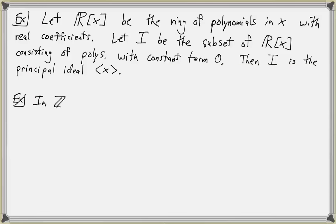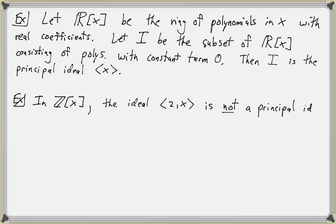Next, let's look at the ring of polynomials in x with integer coefficients, ℤ[x], and consider the ideal generated by two elements: 2 and x. This ideal is not a principal ideal.